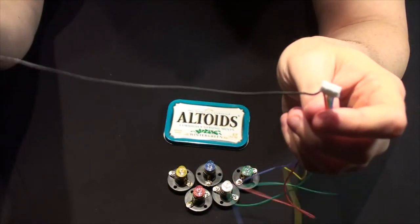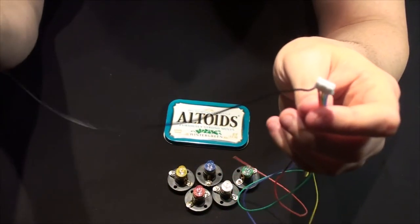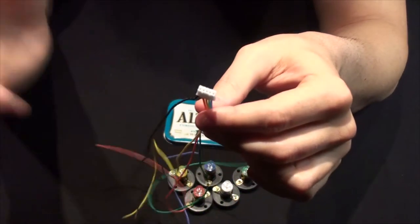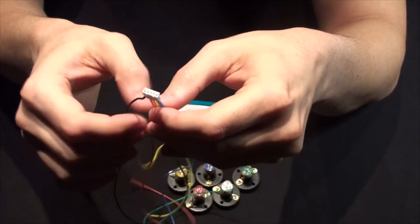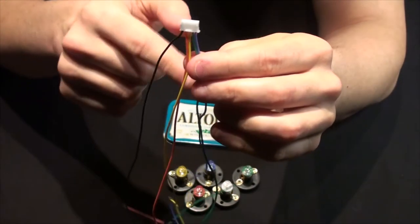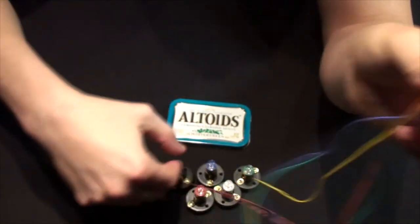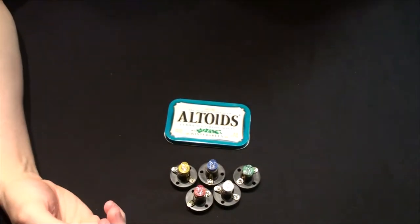I use black for my common ground or these power, which is not really what you're supposed to do. I probably should use white, but there you go. And then each other strand, so you can see red, yellow, red, yellow, green, blue corresponds to one of their colors.